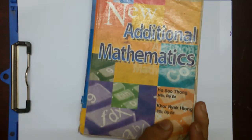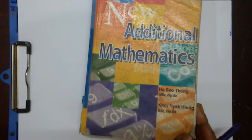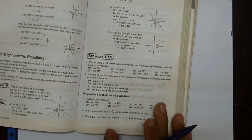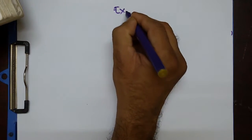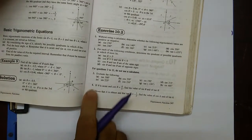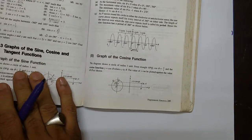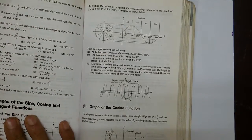Good morning, students. On today's lecture, I'll cover, again, from the new Additional Mathematics book written by Ho Soo Thong and Khoo Nyek Hung. I'm at Exercise 10.2 today, and I would like to solve question number 4, 5, and some questions from this page.